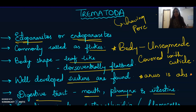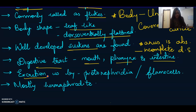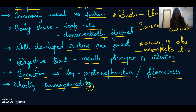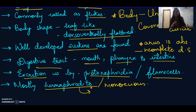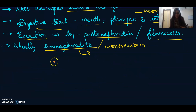That means they have an incomplete digestive system. Excretion is by protonephridia or flame cells. Again, mostly these organisms are hermaphrodite, or we can call them monoecious as well. Hermaphrodite means both male and female sex organs are found in one organism only.